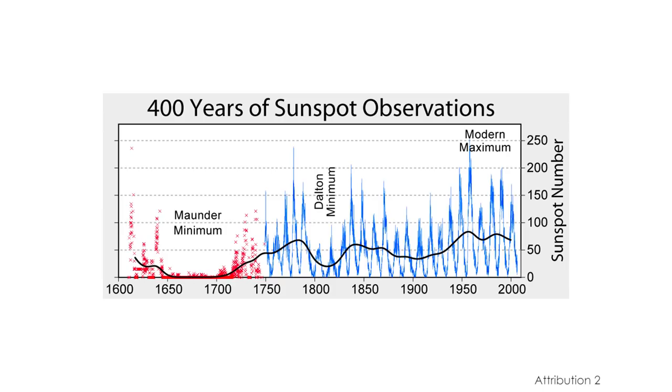The Maunder Minimum occurred from 1645 to 1715. Astronomers like Galileo and Christoph Scheiner kept records of the number of sunspots starting in the 1600s. Sunspots are a good indicator of how active and energetic the sun is at any given time. If there are lots of sunspots, there's also more sunlight reaching the Earth.